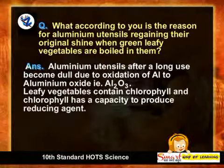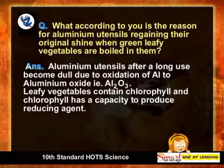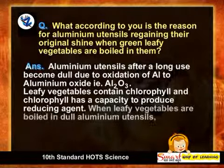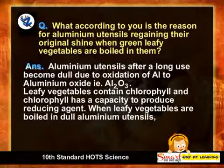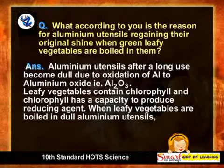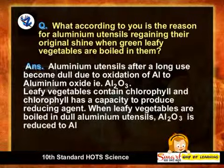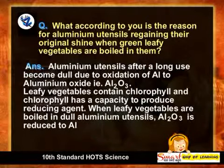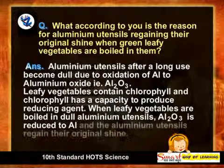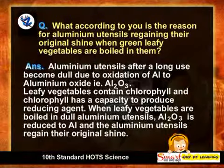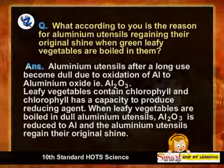Leafy vegetables contain chlorophyll, and chlorophyll can produce a reducing agent. When leafy vegetables are boiled in dull aluminium utensils, aluminium oxide is reduced to aluminium and the aluminium utensils regain their original shine.